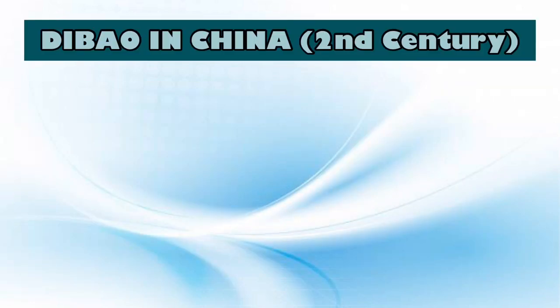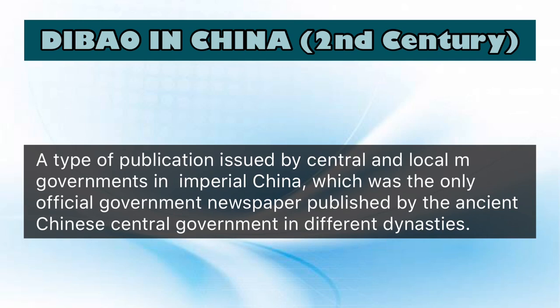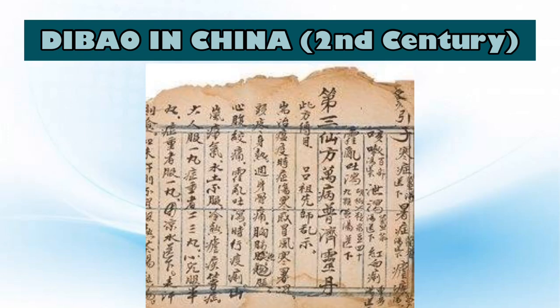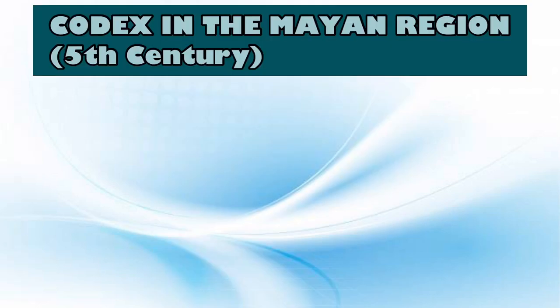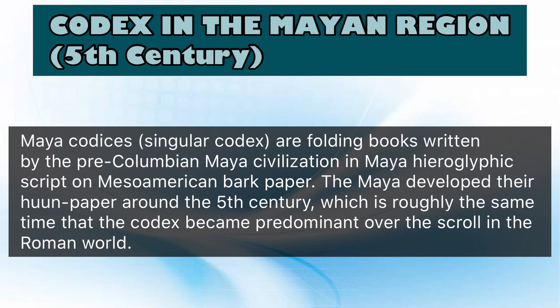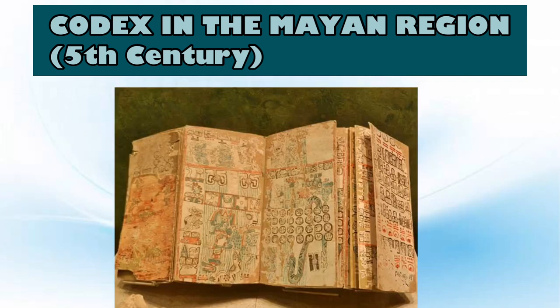Next is the Dibao in China. The Chinese Dibao is the earliest and oldest newspaper in the world. We also have the Codex in the Mayan region — folding books written by the pre-Columbian Maya civilization in Maya hieroglyphic script on Mesoamerican bark cloth. The Maya developed their Han paper around the 5th century, roughly the same time the Codex became predominant over the scroll in the Roman world.